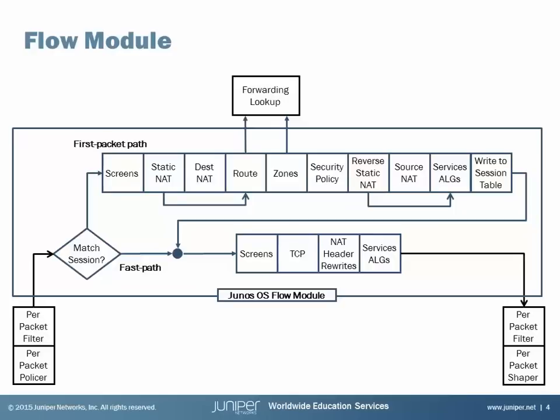When the route lookup happens, next we do the forwarding lookup. When that happens, we do the zone lookup — we look at the egress interface to figure out where the traffic is going, and we see which zone that interface is associated with. This is very important: if the return traffic hits an interface that is not in the same zone as the interface the initiating traffic left on, it will drop the packet. So the key is: as long as both interfaces are in the same zone, asymmetric traffic will work. A lot of people put those two outside interfaces in the same zone and things start working.